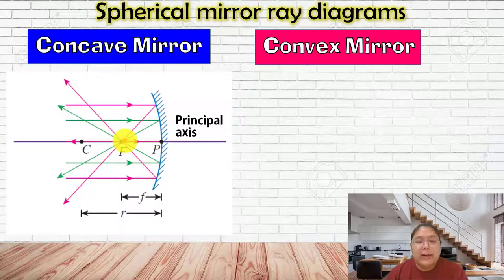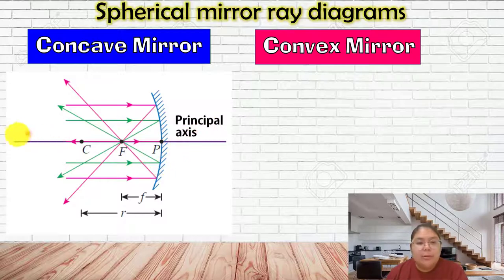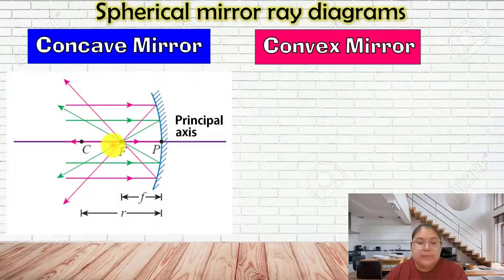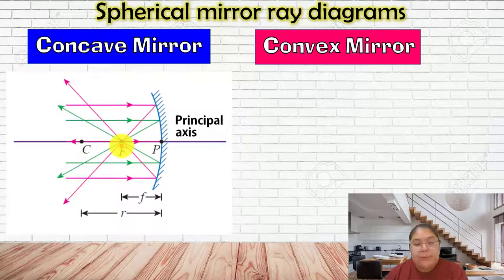All the light converges to one point, so the image is very large because they focus to one point only. The whole line joining P, F, and C we call the principal axis. The small f is the focal length - the distance between the center of the mirror and F. The distance from the center of the mirror to C is called the radius.